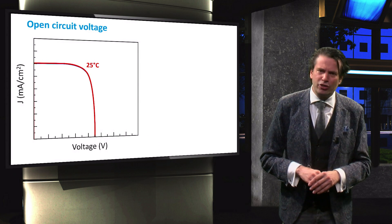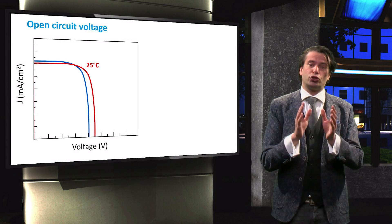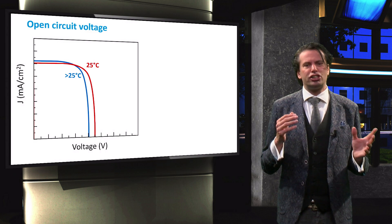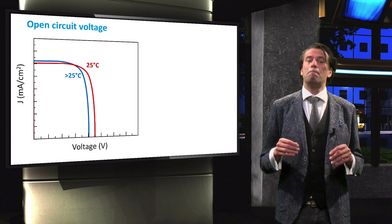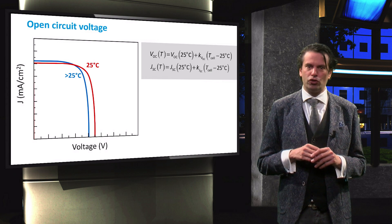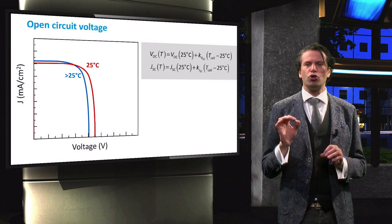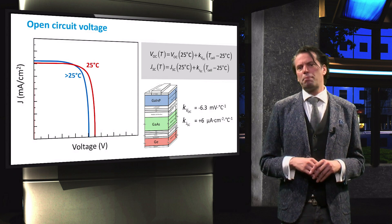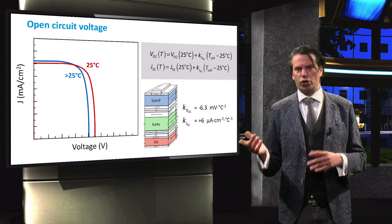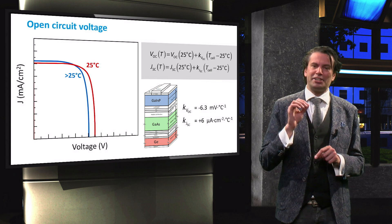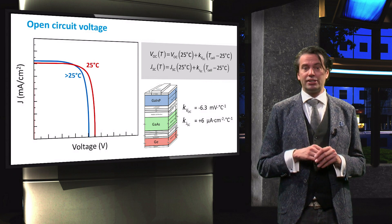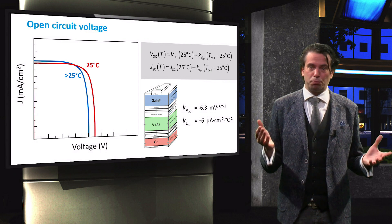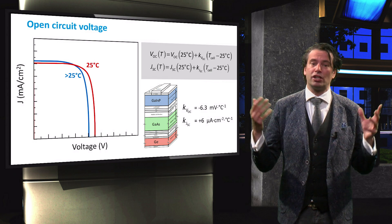How is this reflected in the J-V curve of the solar cell? If the temperature increases, the short circuit current density will slightly increase, but the open circuit voltage will decrease. The fill factor will not change significantly for moderate temperature increases. Because of this temperature effect, manufacturers provide so-called temperature coefficients on specification sheets of solar modules. This sheet indicates how the solar cell parameters change with respect to the standard test condition temperature of 25 degrees Celsius. For the triple junction gallium indium phosphide, gallium arsenide, and germanium multijunction device used earlier in this section, the open circuit voltage decreases with 6.3 millivolts per degree Celsius, and the current density increases with 6 microamperes per degree Celsius. Sometimes the temperature coefficients are given as a percentage per unit temperature, in which case these equations have to be adjusted to facilitate a fractional change.